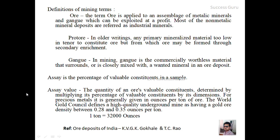But if the concentration is not yet profitable, it is not considered ore. For example, for gold, 0.35 ounces per ton is considered a good, high-quality deposit — that is a deposit you can mine.